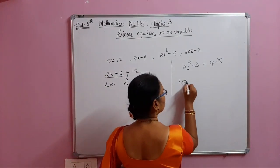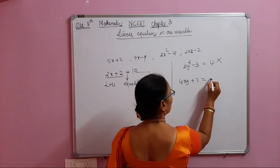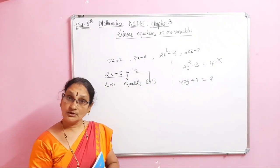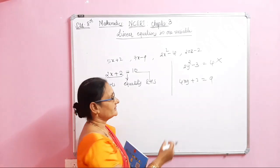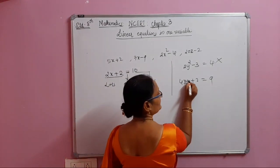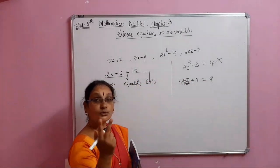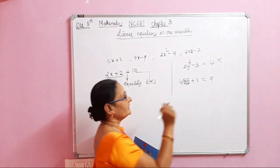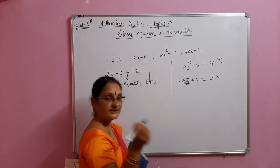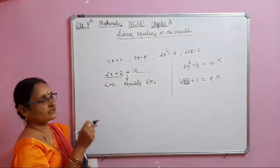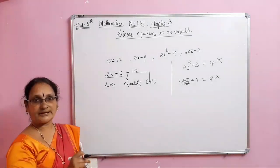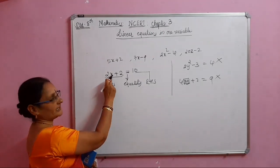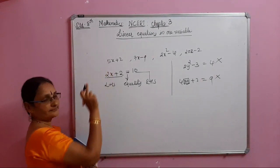Then, 4xy plus 2 equal to 9 — is it a linear equation? No. Why? There must be only one variable, but here there are two variables: x and y. So this is not a linear equation. A linear equation must be an algebraic expression having one variable of power 1.